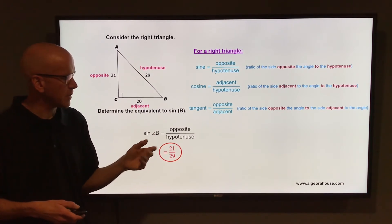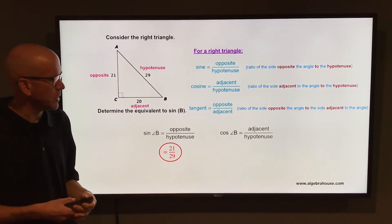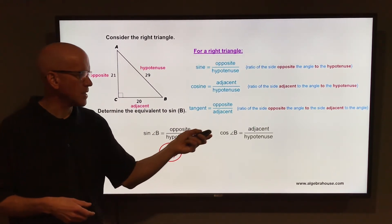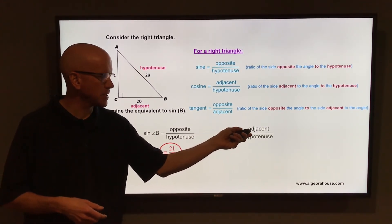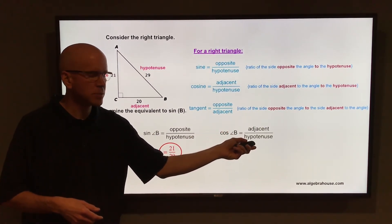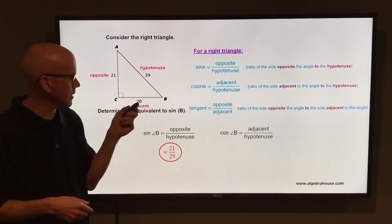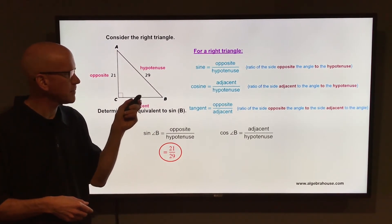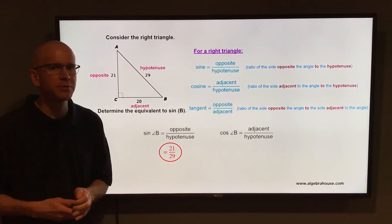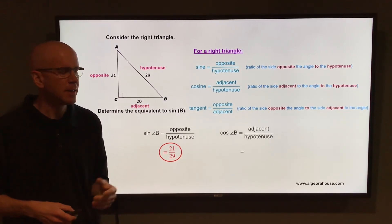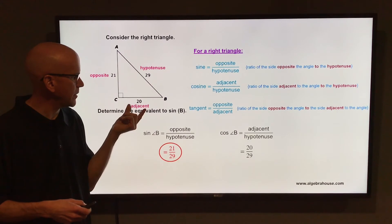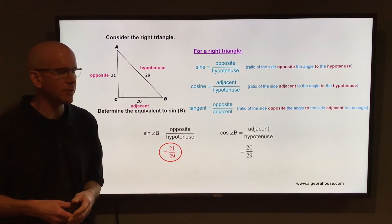By the way, the cosine of angle B is the ratio of the adjacent side to the hypotenuse. The side adjacent to angle B is 20, and the hypotenuse is 29, so the cosine of angle B is 20 over 29.